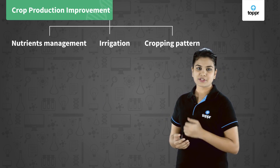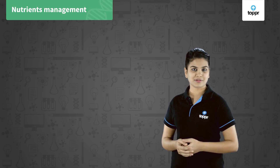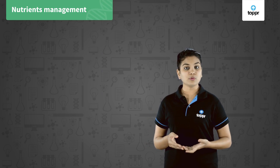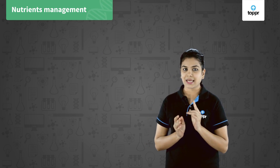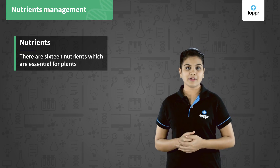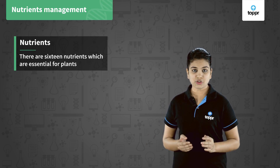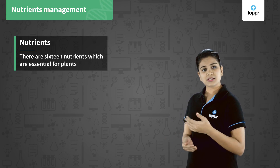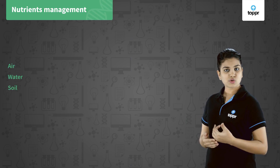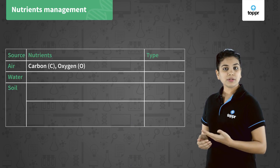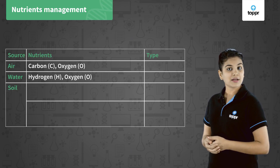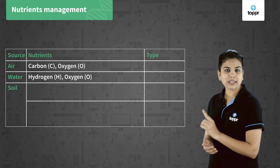Let's discuss the first strategy: nutrient management. All living organisms need food to grow; similarly, plants also need food in the form of inorganic elements called nutrients. There are 16 nutrients which are essential for plants. These nutrients are supplied to the plants by air, water, and soil. Air provides carbon and oxygen, water supplies hydrogen and oxygen, and soil supplies the remaining 13 elements.